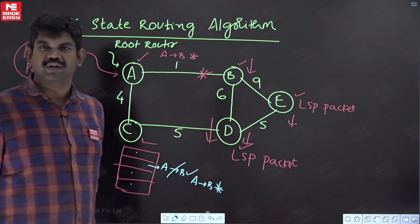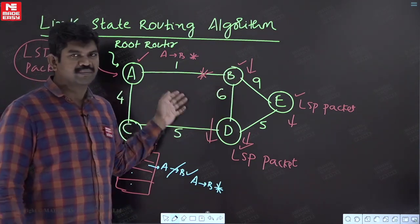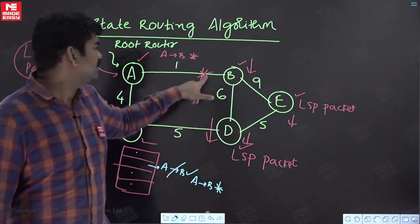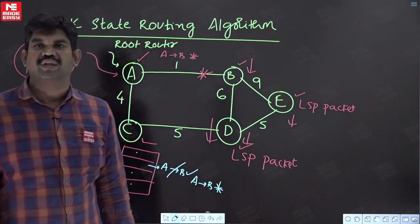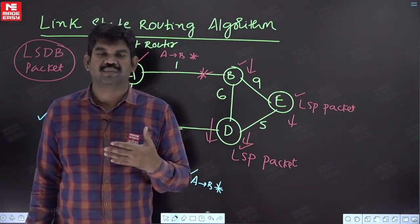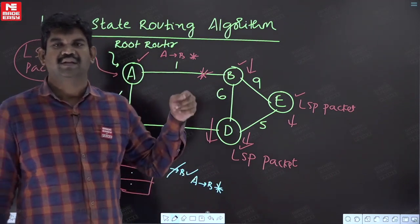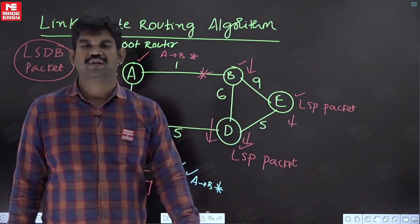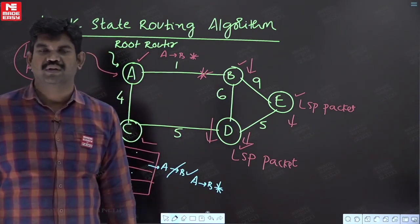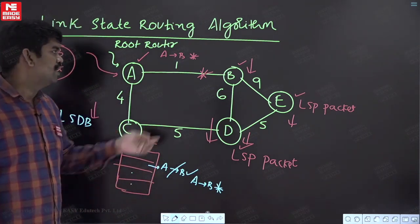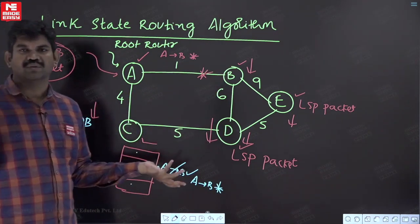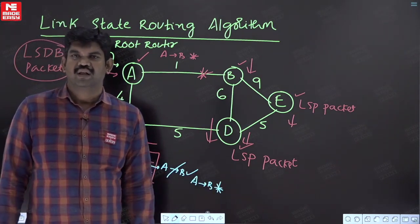There is no count to infinity problem because every router — C, D, B, and E — gets the latest network information immediately with the help of the LSDB. When a link is broken it is known immediately, so no router will forward data via that broken link. In distance vector routing, when a link broke, neighboring routers gave false information saying they could still reach it, counting up 2, 3, 4, 5, 6... to infinity — creating a quasi-stable state. That problem does not occur here.